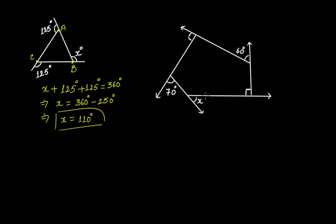From this figure, we have x, 70 degrees, and 90 degrees shown as exterior angles, plus 60 degrees. One angle is shown as 90 degrees interior, so since it forms a linear pair, the corresponding exterior angle is also 90 degrees. This polygon has five sides — it's a pentagon.